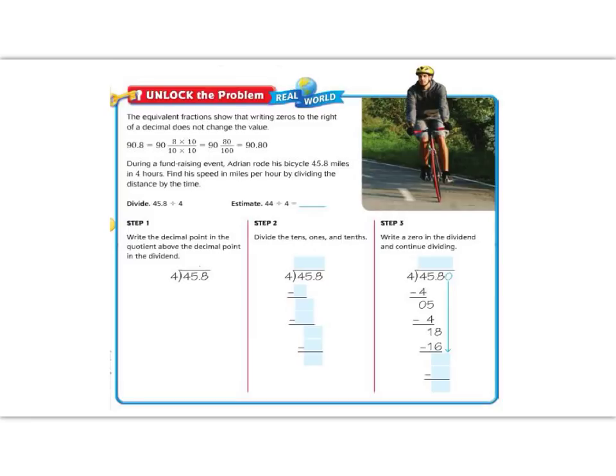Let's begin by reading the Unlock the Problem. It says, the equivalent fractions show that writing zeros to the right of a decimal does not change its value. For example, 90.8 equals 90 and 8 over 10, then 10 times 10. 8 times 10 is 80, and 10 times 10 is 100. So now we've gone from 90.8 to 90.80.